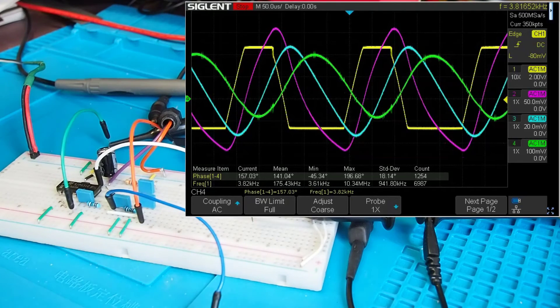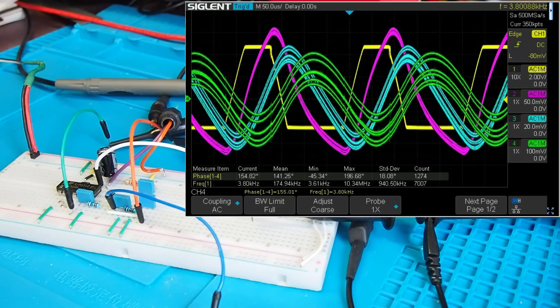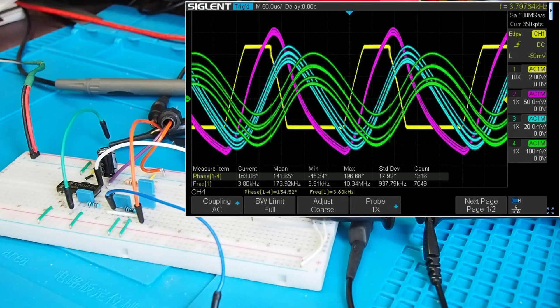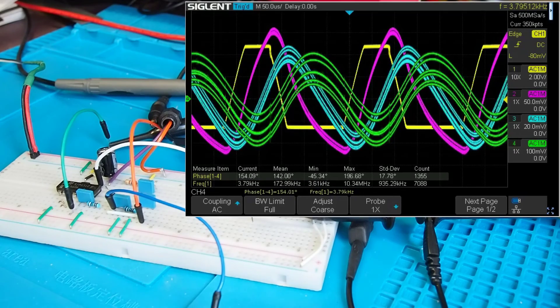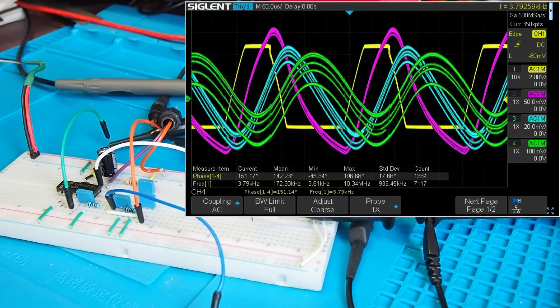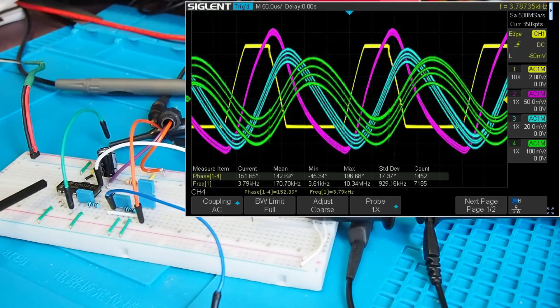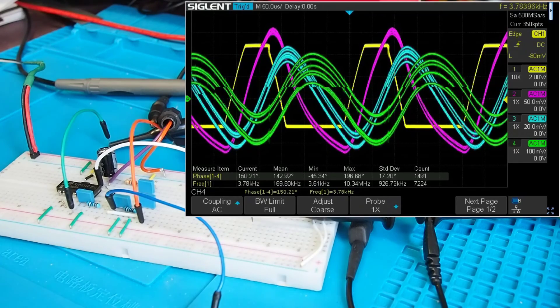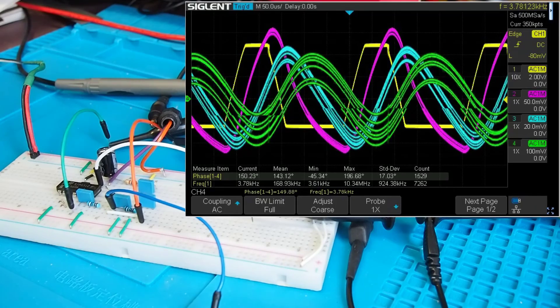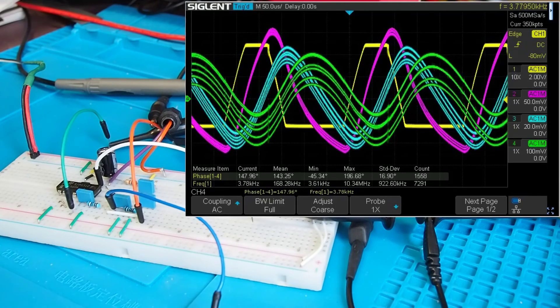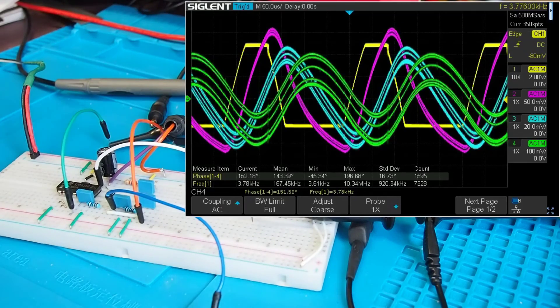I've also got the scope doing the measurement for me, so it's saying 3.80 kilohertz, and the phase difference between channel one and channel four is about 157 degrees, 141 mean. If we just let the scope run a bit longer, I suspect that mean will creep up. Yes it is, but I've got about 150 degrees, something like that, of phase change going on between the start and the finish of that positive feedback loop. Obviously the IC would not oscillate if the phase hadn't been changed, because that negative feedback would eventually cancel out what was going on. So there you go, that's a bit of phase change in action.